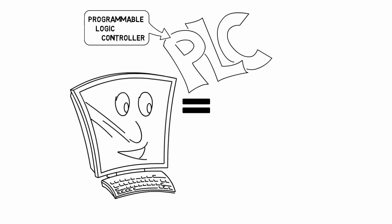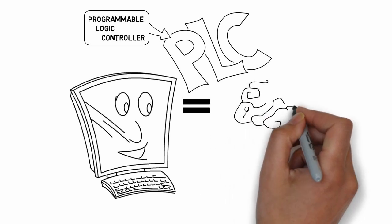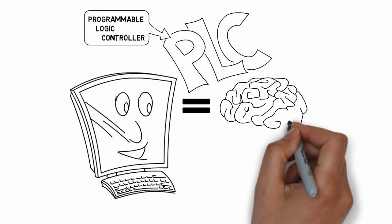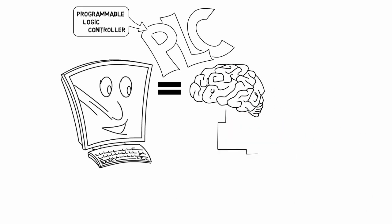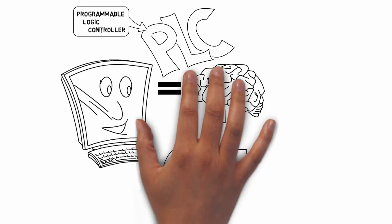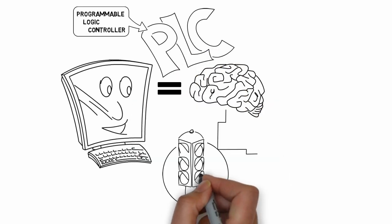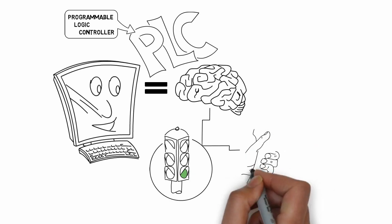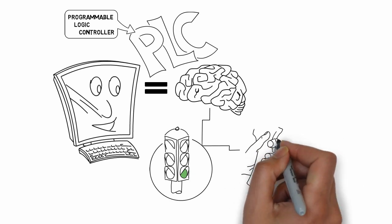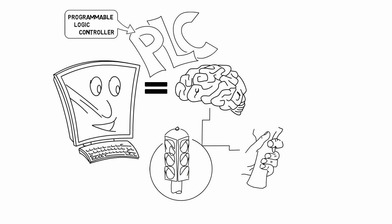For the sake of comparison, let's use a process that's manual as an example. Think of a PLC like a brain controlling a finger on the trigger of an applicator. The brain sends a signal to the finger, directing it to pull the trigger so something is dispensed. When the brain wants the finger to stop pulling the trigger, it sends another signal, so the dispensing ends.